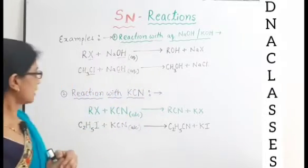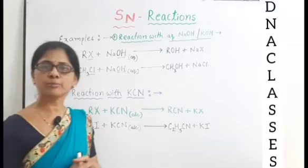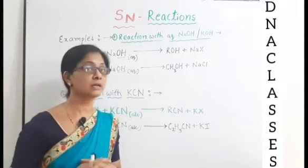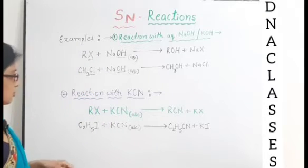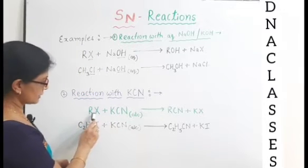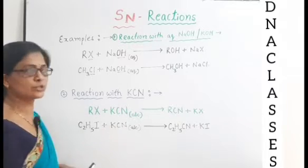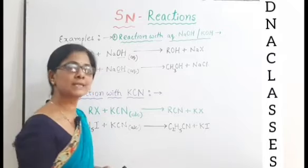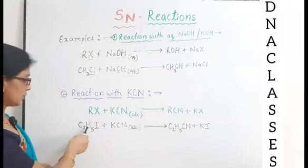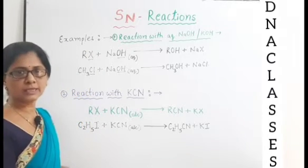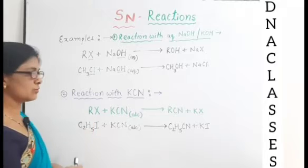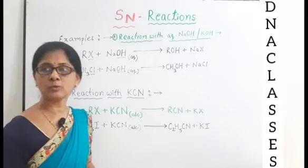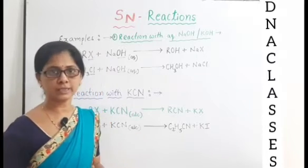One more example, that is reaction with KCN. Potassium cyanide ke saath yadhi aap haloalkane ka reaction karvayate hai, the general reaction is RX plus KCN alcoholic solution, you will get RCN plus KX. Particular member yadhi hum leke baat kare, toh maine R ka value C2H5 aur X ke place par I, iodine liya hua hai.